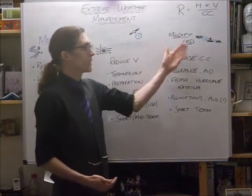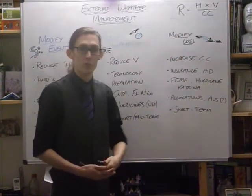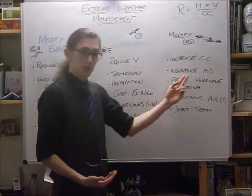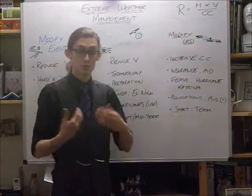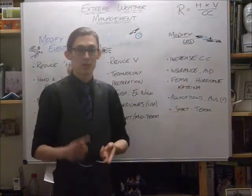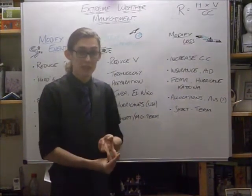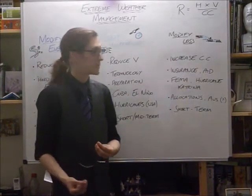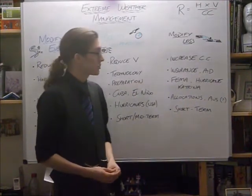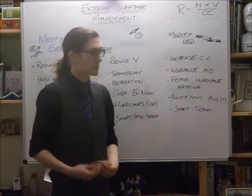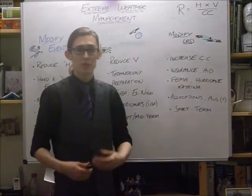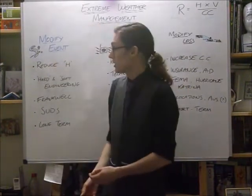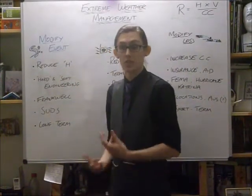In the very short term, we can modify the loss. This is changing the capacity to cope — making sure that people can actually get through the worst when an extreme event occurs. Insurance in more developed countries and aid in all countries can be used to make sure people have access to money, have their economic livelihoods and possessions protected, and keeps people able to live throughout the most challenging part of an extreme weather event. FEMA, the Federal Emergency Management Association, was used — admittedly a little late — in Hurricane Katrina. They coordinated aid coming in and also coordinated the evacuation, which is a modification of vulnerability. However, they were not responsible for Hurricane Katrina's levees and flood walls, which did of course burst, leading to the big problems that we saw.